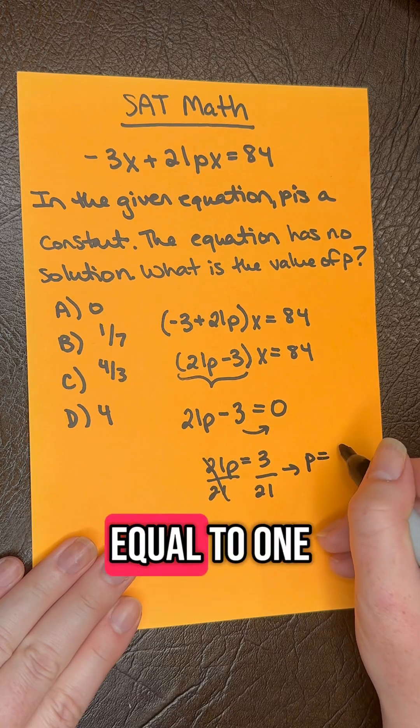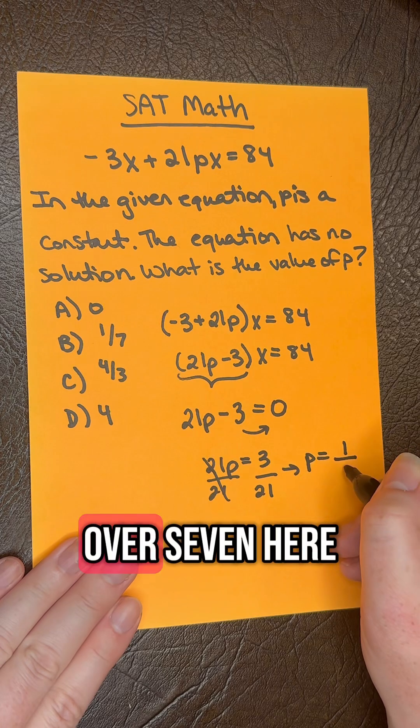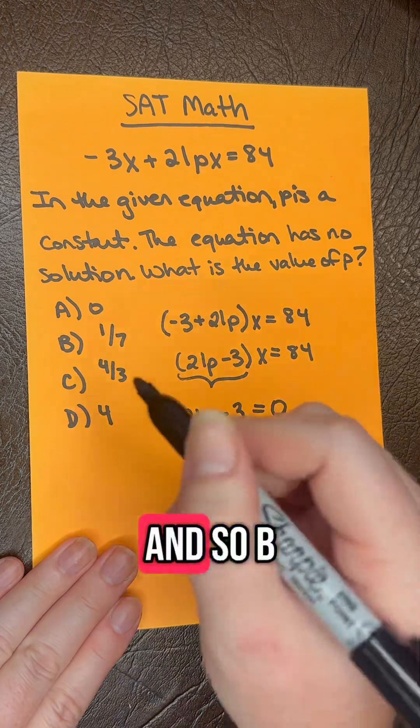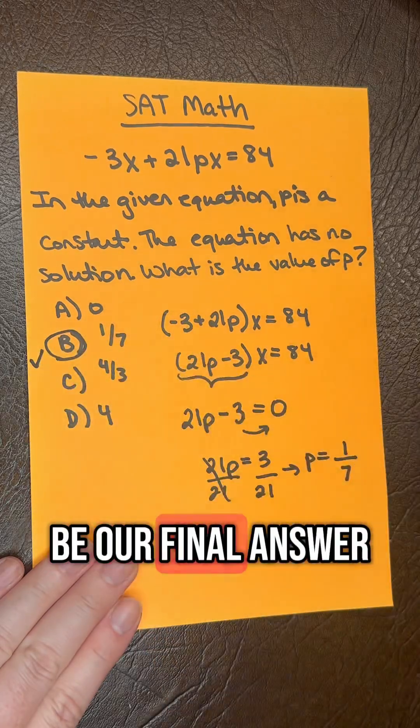P is equal to one over seven here, and so B is going to be our final answer.